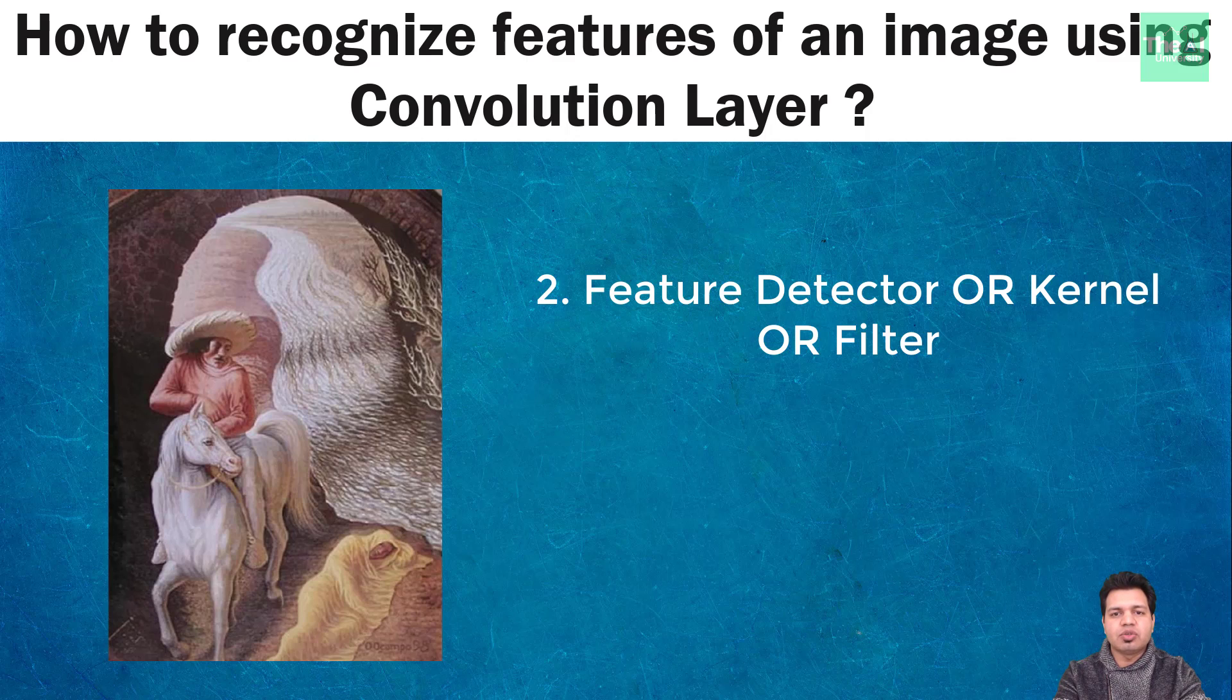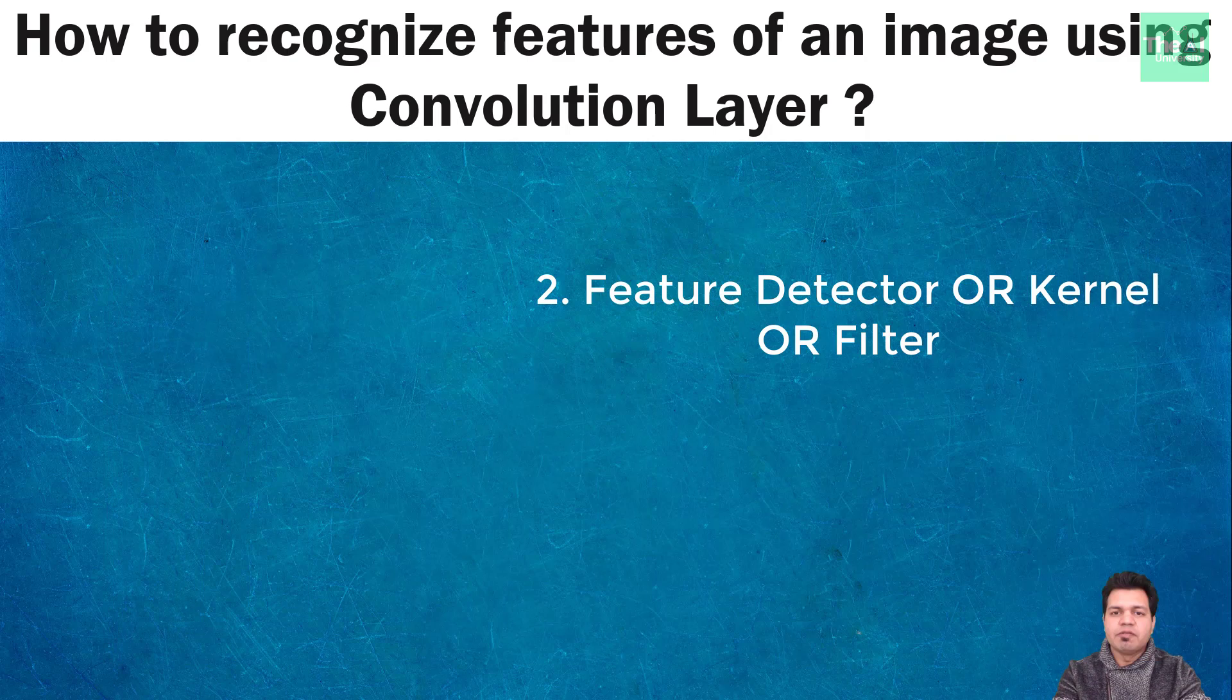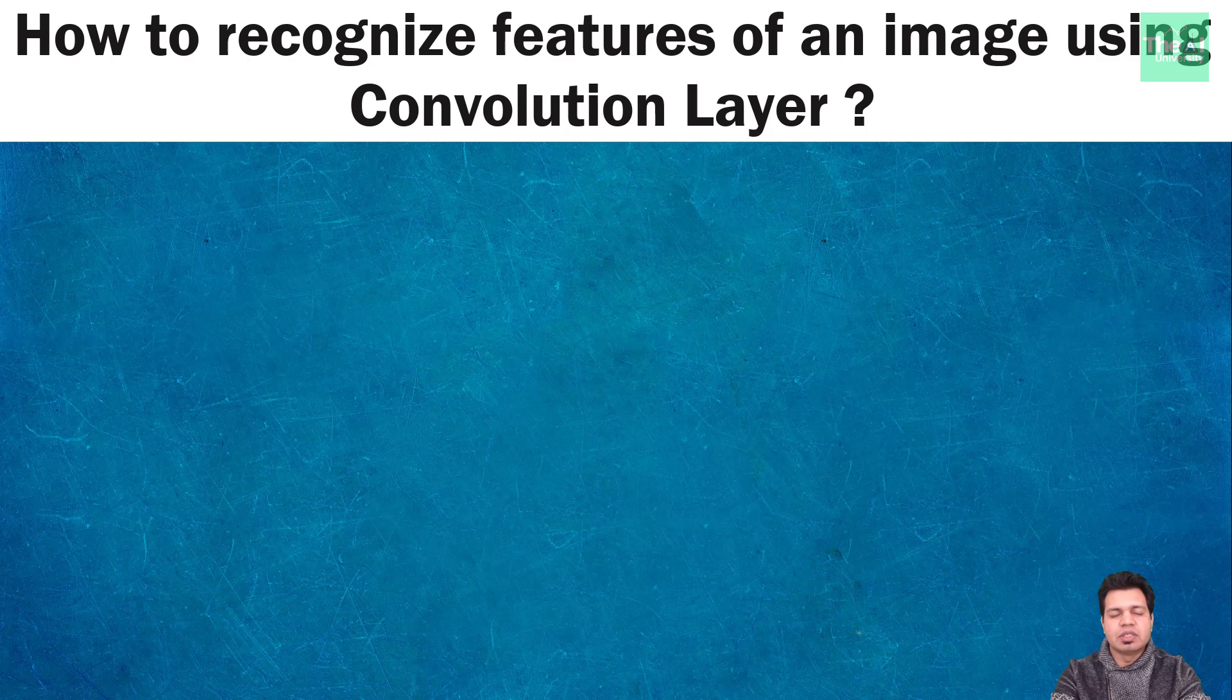So CNN makes use of this feature detector to detect the significant features of an image data in order to provide predictions. Feature detector is simply a small matrix of weights. Now the third concept is convolution and let's try to understand it.